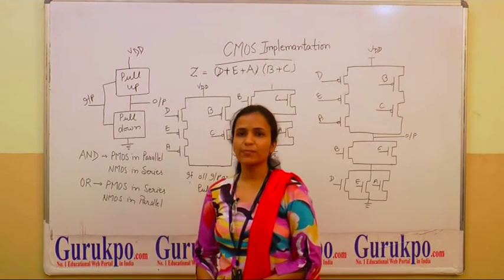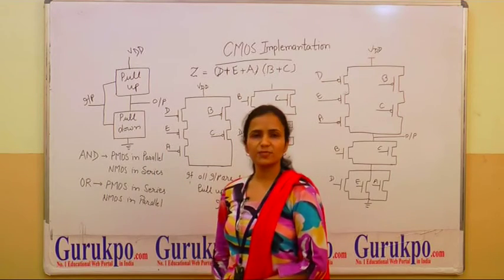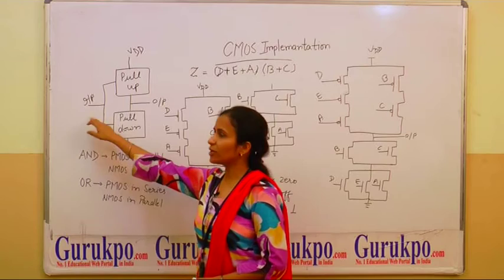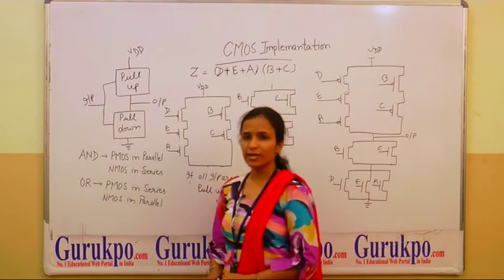Pull-up network is made by PMOS transistor and pull-down network is made by NMOS transistors. Here input is given at this point and output is taken from this point. According to the designing rule,